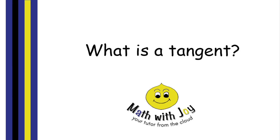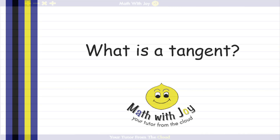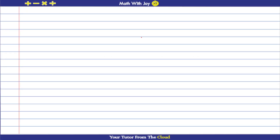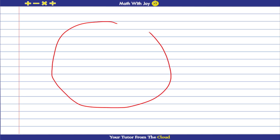What is a tangent? Let's draw the circumference of a circle. So this is the circumference of a circle. Now let's imagine that this circle has a point somewhere on it, on the circumference.